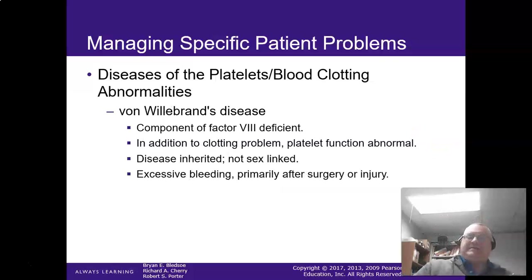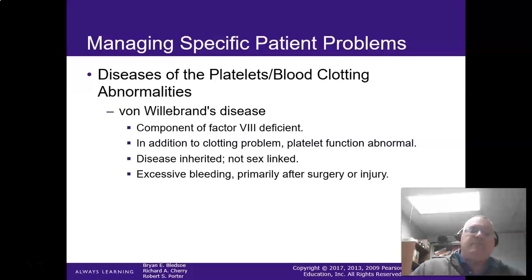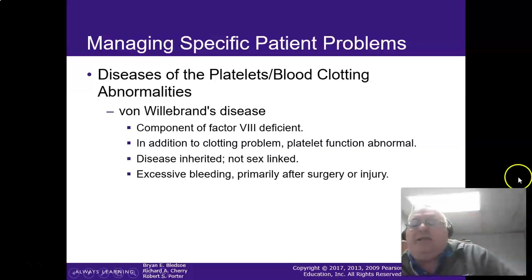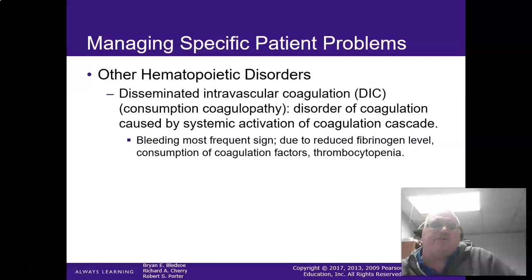Von Willebrand's disease: they are missing factor eight, and in addition the platelet function is abnormal. It's usually an inherited disease and can affect male or female. They have excessive bleeding, primarily after surgery. If you've got somebody with von Willebrand's disease, you definitely need to make sure that the doctors know that.